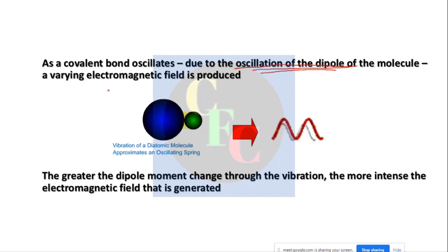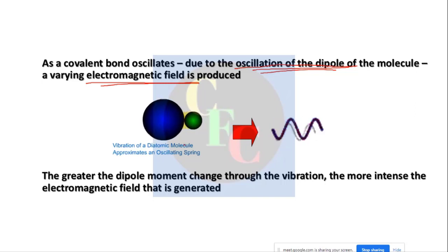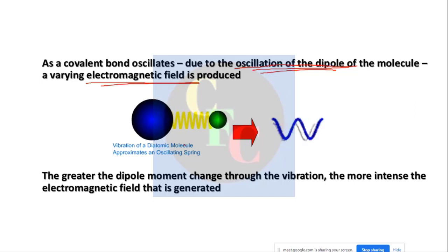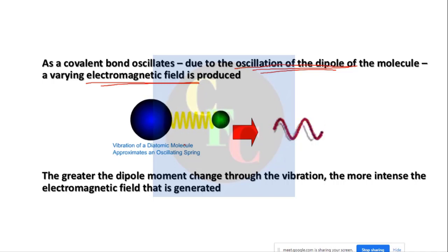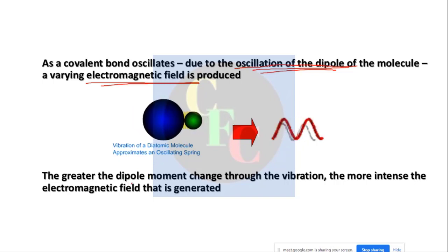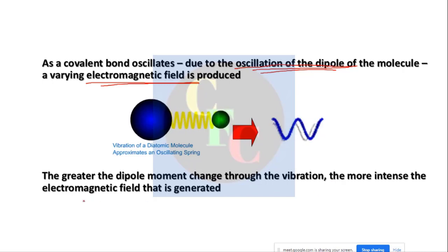This oscillation produces an electromagnetic field, which interacts with the electromagnetic radiation from the source in the instrument. Greater the dipole moment change through vibration, the more intense the electromagnetic field that is generated.